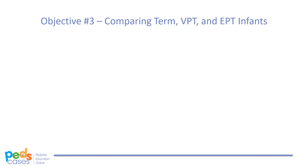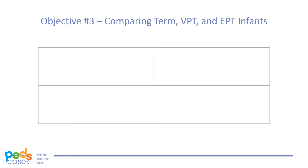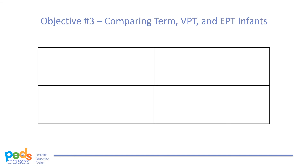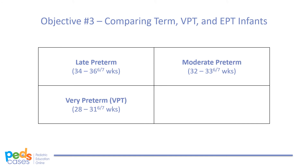Let's move on to objective 3. Preterm birth can be further classified into four different gestational age ranges: late preterm, moderate preterm, very preterm, and extreme preterm. Late preterm infants are born between 34–37 weeks gestational age. Moderate preterm infants are born between 32–34 weeks, very preterm infants between 28–32 weeks, and extreme preterm infants at a gestational age of less than 28 weeks.